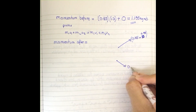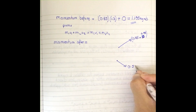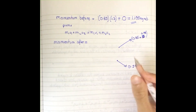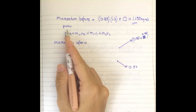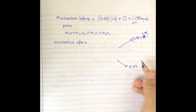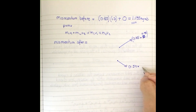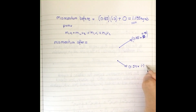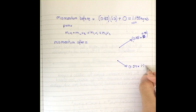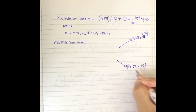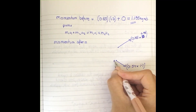For ball B, its momentum is 0.54 kg (its mass) multiplied by 1.7 m/s, which is the final speed of B. Ball B is going downward.